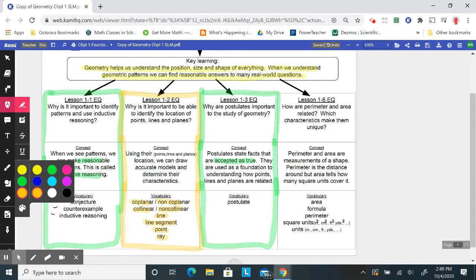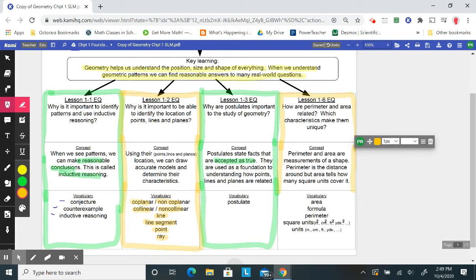Then the final lesson, the fourth lesson in this chapter, is actually lesson 1.6 from the textbook, which we are not going to hand out. Lesson 1.6 asks, how are perimeter and area related? Which characteristics make them unique? Just a quick reminder, perimeter and area are measurements of a shape.